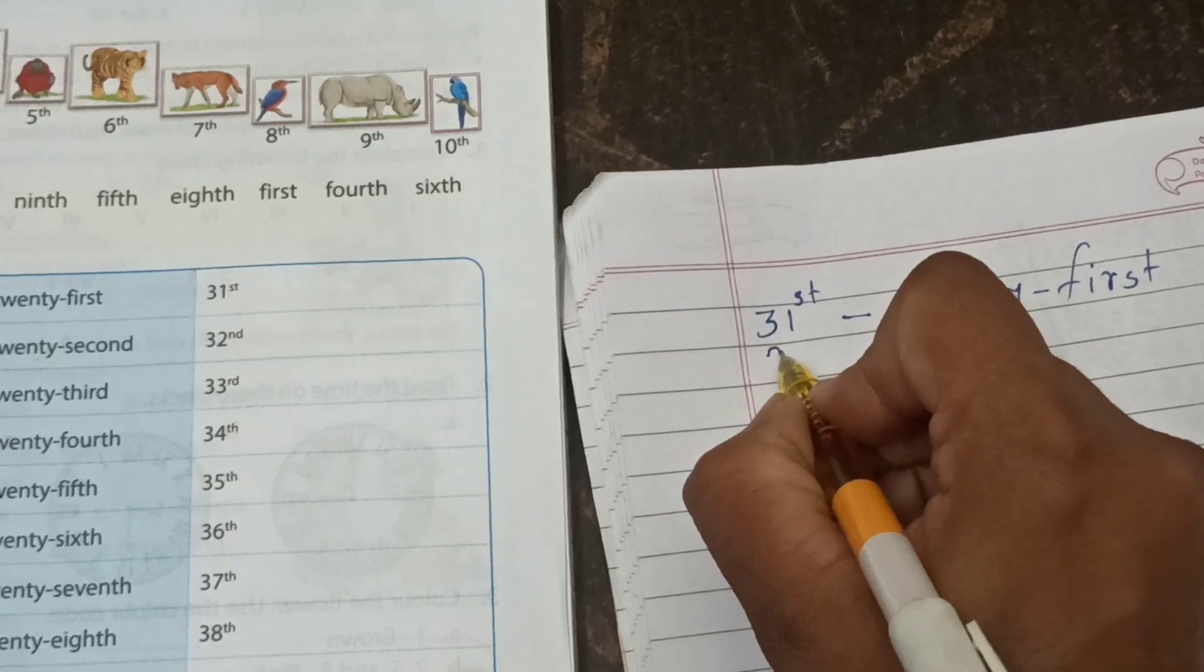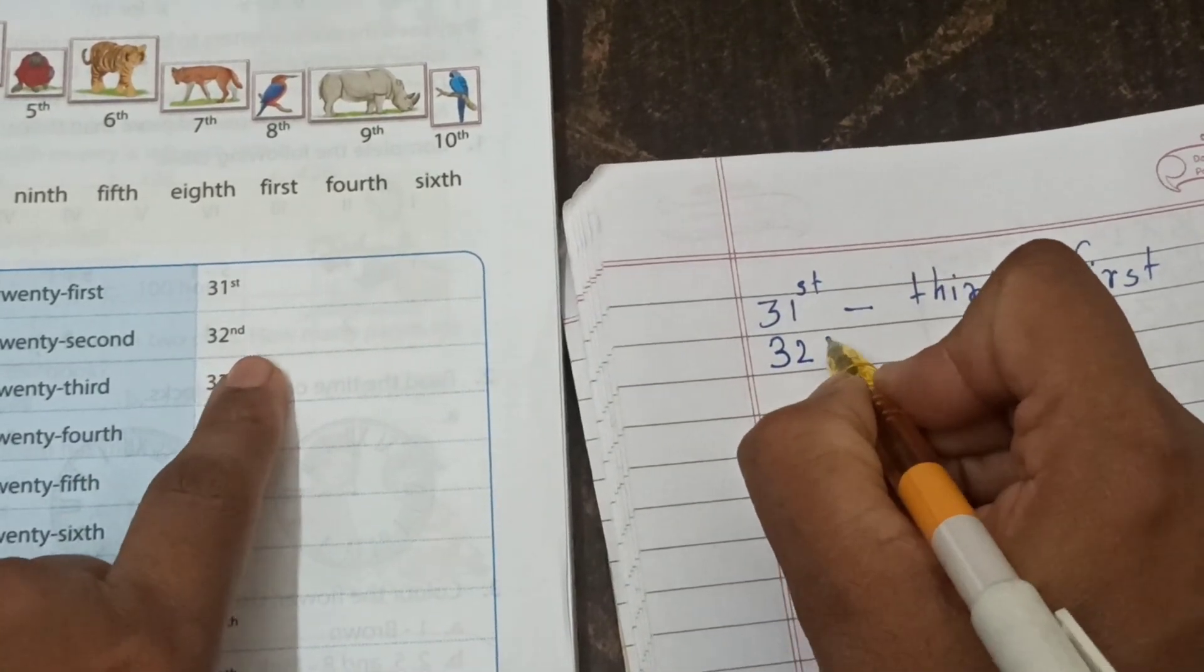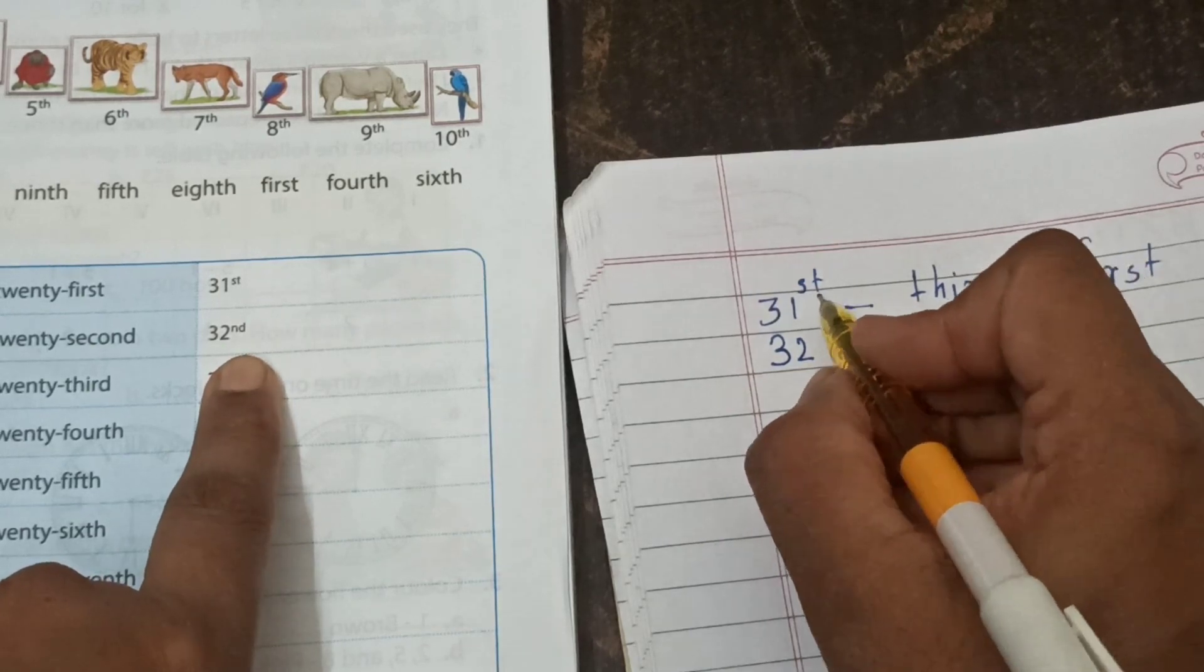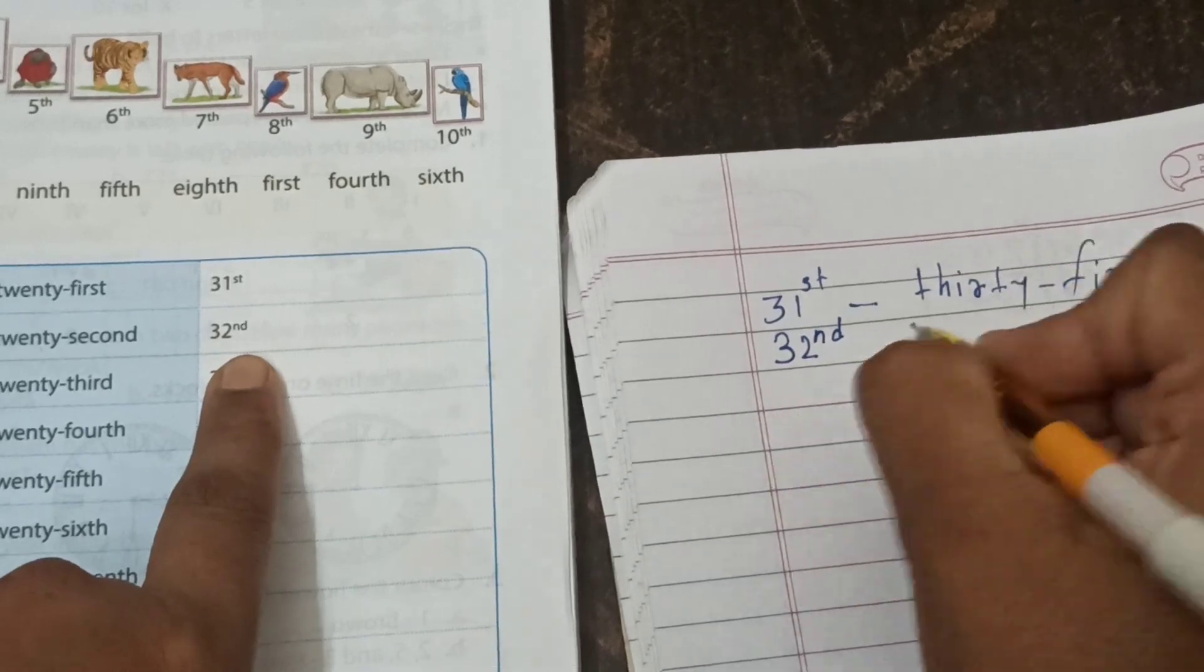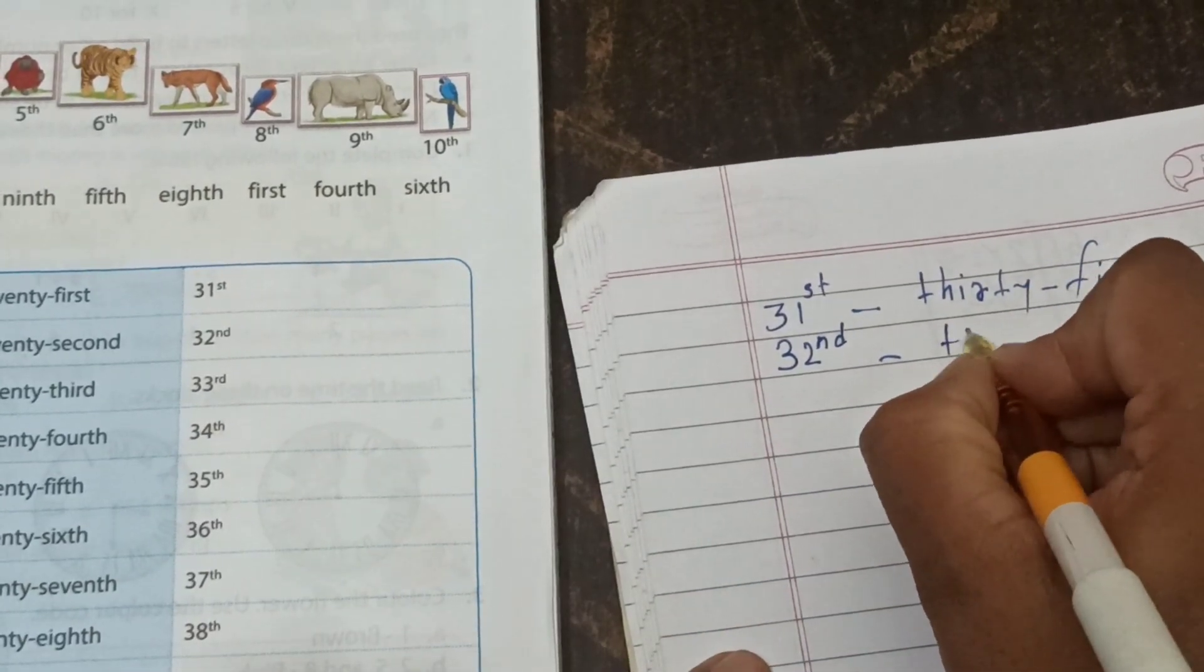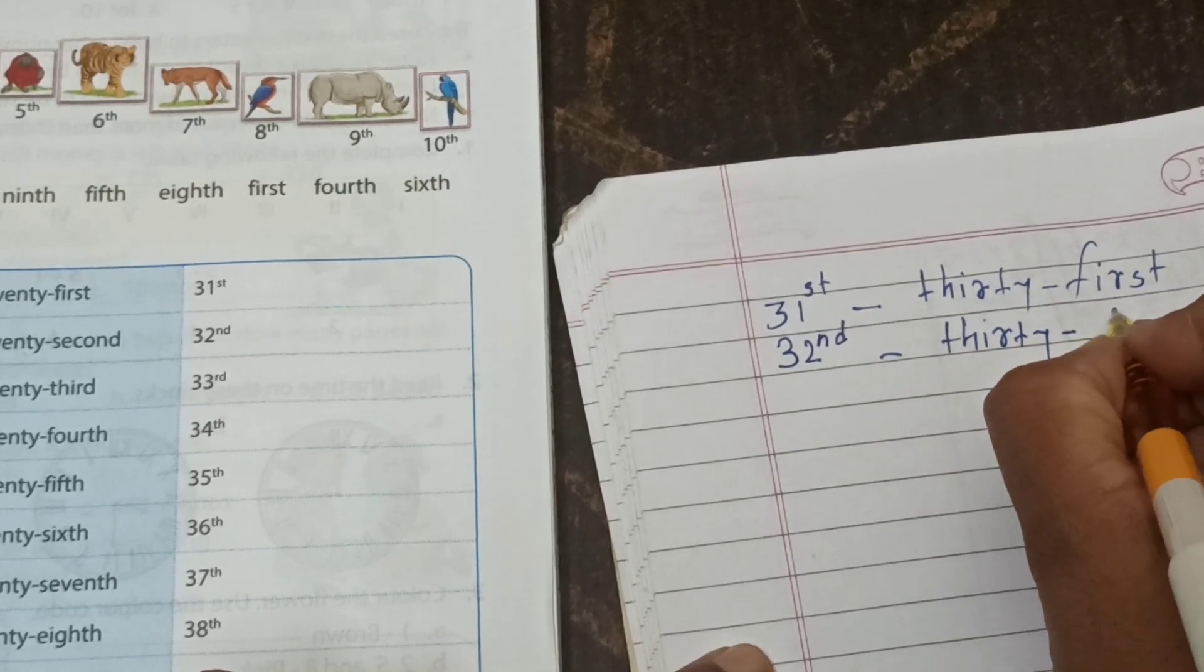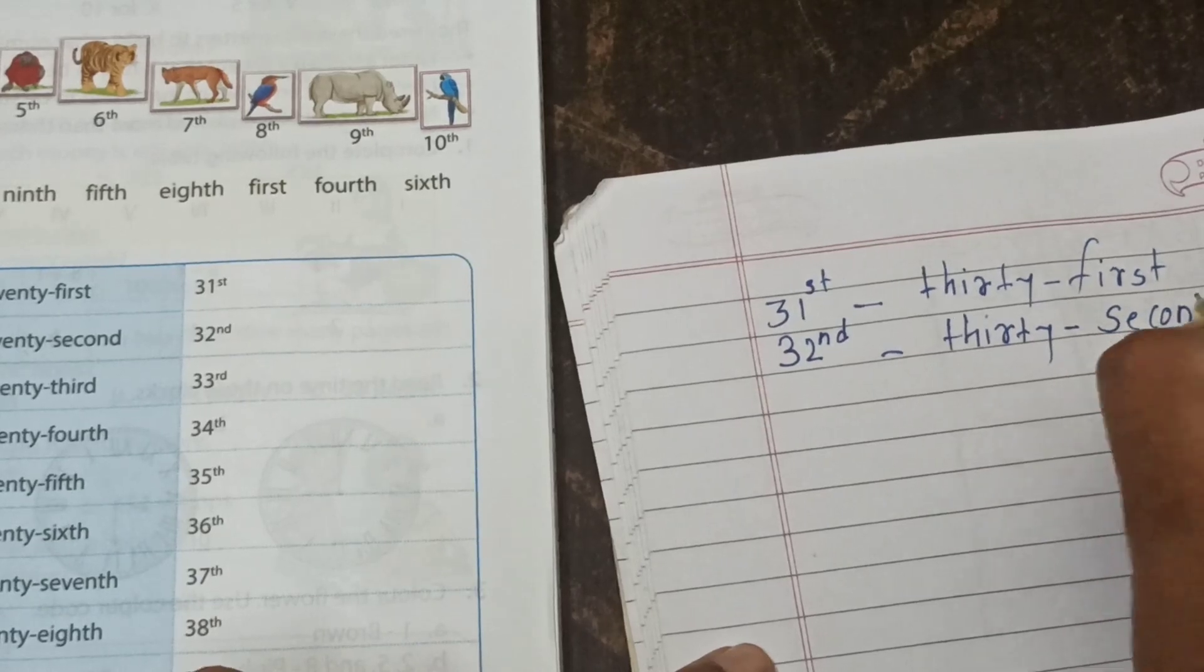Then see 3, 2. 32 - how we say, how we read this one number? 32nd. N-D, write down here N-D. And write here 30: T-H-I-R-T-Y. 32nd: S-E-C-O-N-D. 32nd.